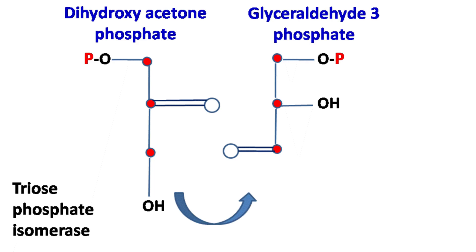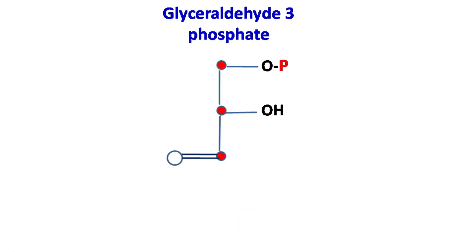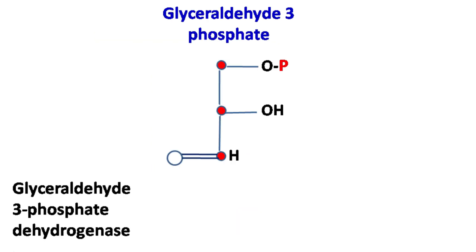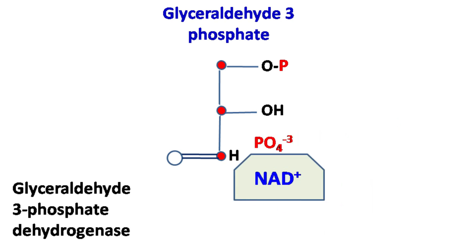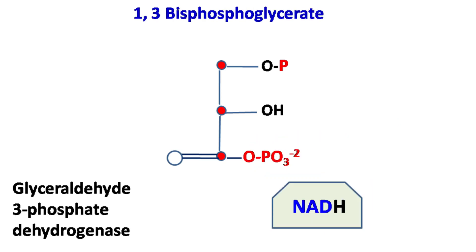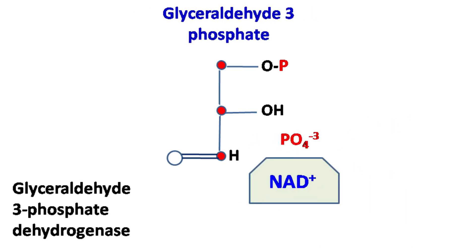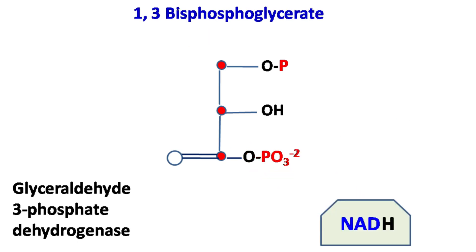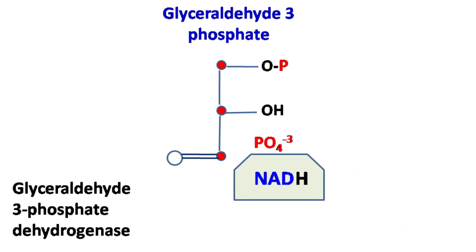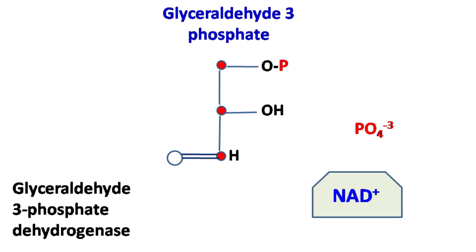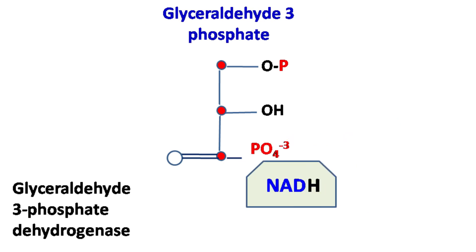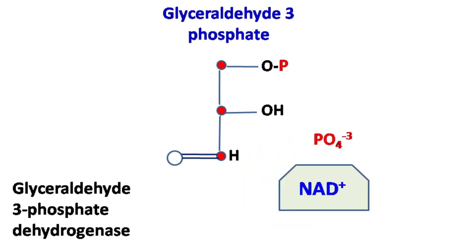Dihydroxyacetone phosphate can be converted into glyceraldehyde-3-phosphate by the enzyme triose phosphate isomerase. Glyceraldehyde-3-phosphate is then converted into 1,3-bisphosphoglycerate by the enzyme glyceraldehyde-3-phosphate dehydrogenase. During this step, NAD+ gets converted into NADH along with the addition of inorganic phosphate.